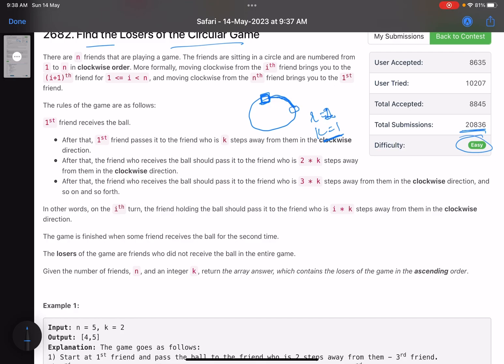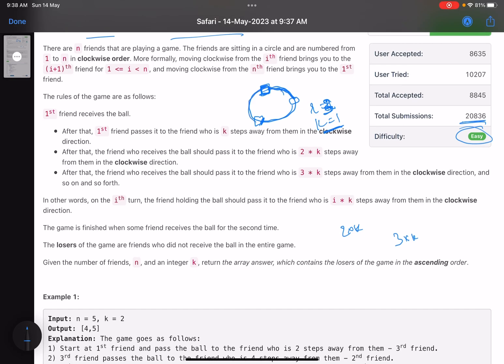Now this friend receives the ball. Now it is round two, so this friend will pass the ball to which friend? Who is two times k steps away. Now this guy has the ball. Since it is round three now, this friend will pass the ball to three times k steps away. This will keep on happening till there is a player who receives the ball twice.